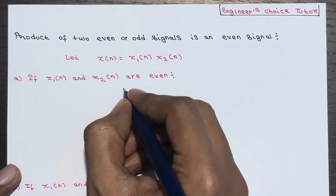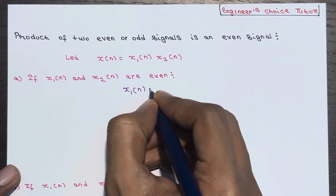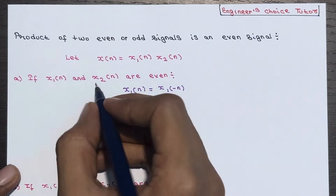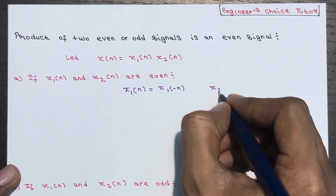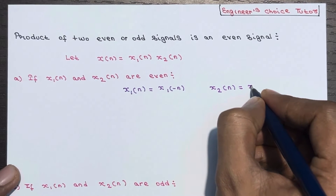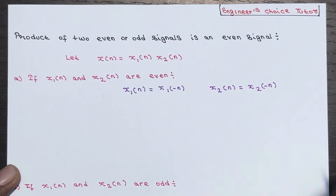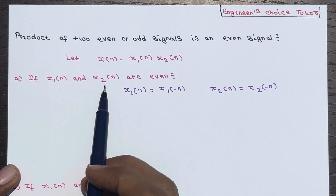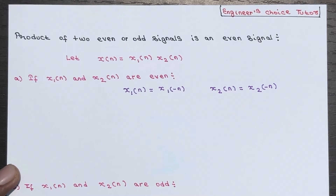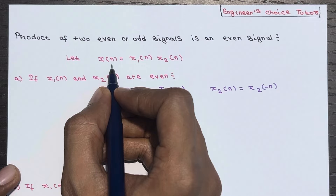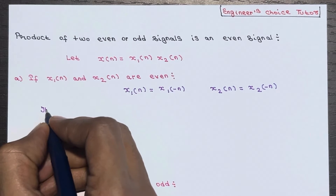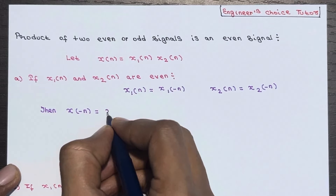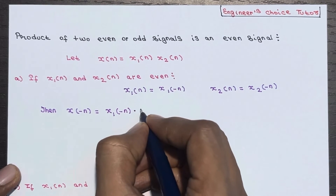If x1(n) and x2(n) are even signals, it means we can write x1(-n) = x1(n) and similarly x2(-n) = x2(n) for all values of n. So if x1(n) and x2(n) are even, we can write them like this. Now, for x(n) = x1(n) · x2(n), what will be the value of x(-n)? We get x(-n) = x1(-n) · x2(-n) by replacing n with -n.